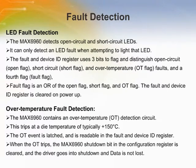The MAX6960 has inbuilt fault detection features including LED fault detection and over-temperature fault detection. The fault and device ID register uses three bits to flag and distinguish open circuit, short circuit, over-temperature, and a fourth flag. The fault flag is an OR of the open flag, short flag, and OT flag. When the OT trips, the MAX6960 shutdown bit in the configuration register is cleared and the driver goes into shutdown, but data is not lost. The fault and device ID register is cleared on power-up and can also be cleared by writing to it. The fault flags are not cleared by a read.